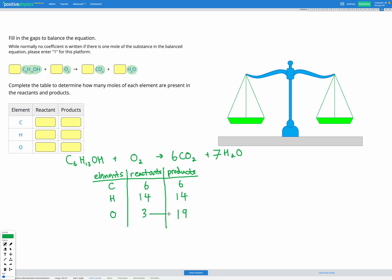Right now we have 3, we need to get to 19, so to get from 3 to 19 we need to add 16. We can see our oxygen is O2 here, so if we want 16 more that means we want 8 more sets of 2.